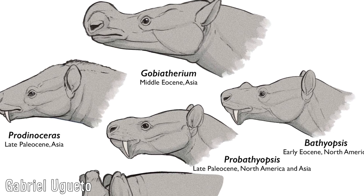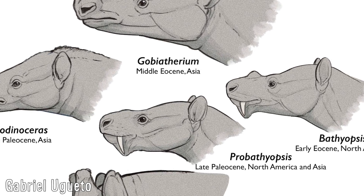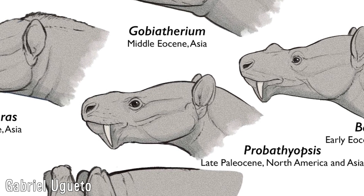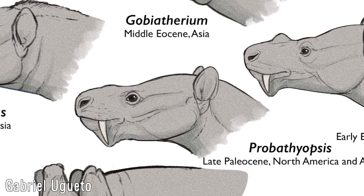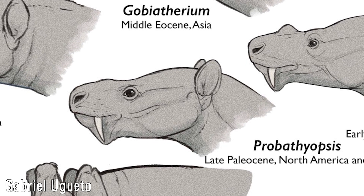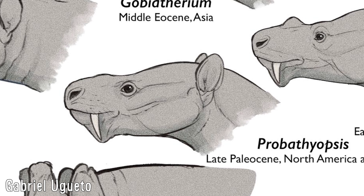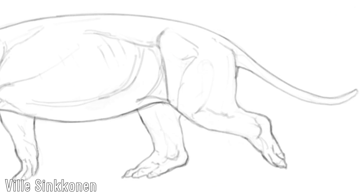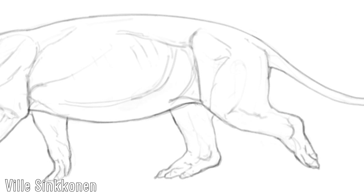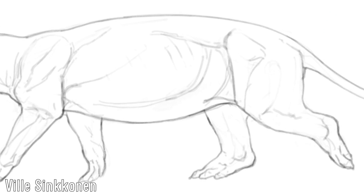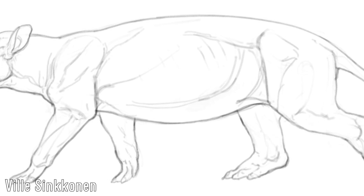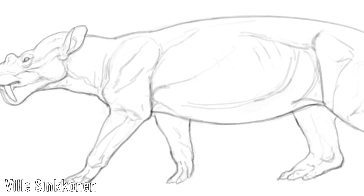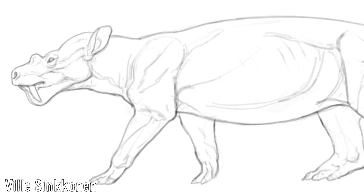Probathyopsis was a genus that lived around the same time as Prodinoceras but instead lived in North America, which indicates that the group occurred simultaneously in both North America and Asia. This meant that the two landmasses were connected to an extent during this time, and that there was indeed an interchange between the two species of Dinocerata and other animal groups. Later animals like Bathyopsis, which lived from the early through to the Middle Eocene, were generally similar in appearance but now featured the derived traits of two small knobs on the head, which in later Uintatheria would become even more extravagant.